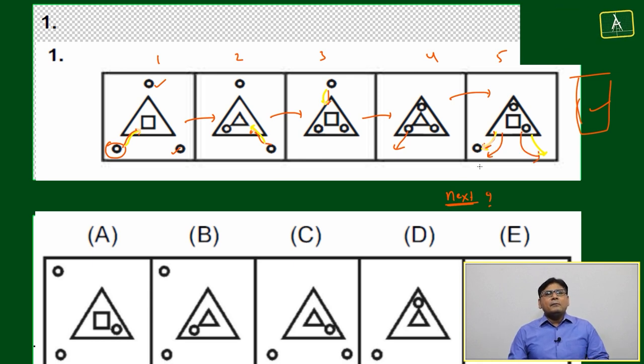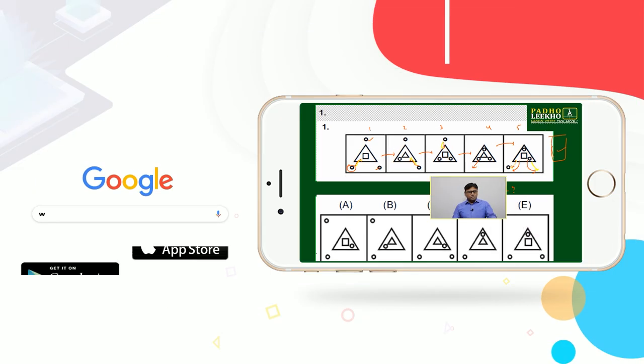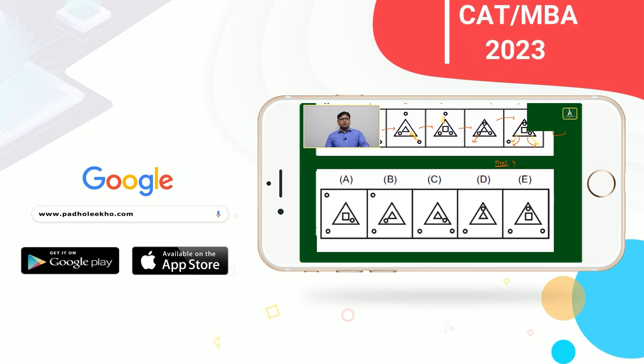Next figure, bottom side, two balls must be outside or must come out. Which one is showing? This is showing option E, where two balls are outside.